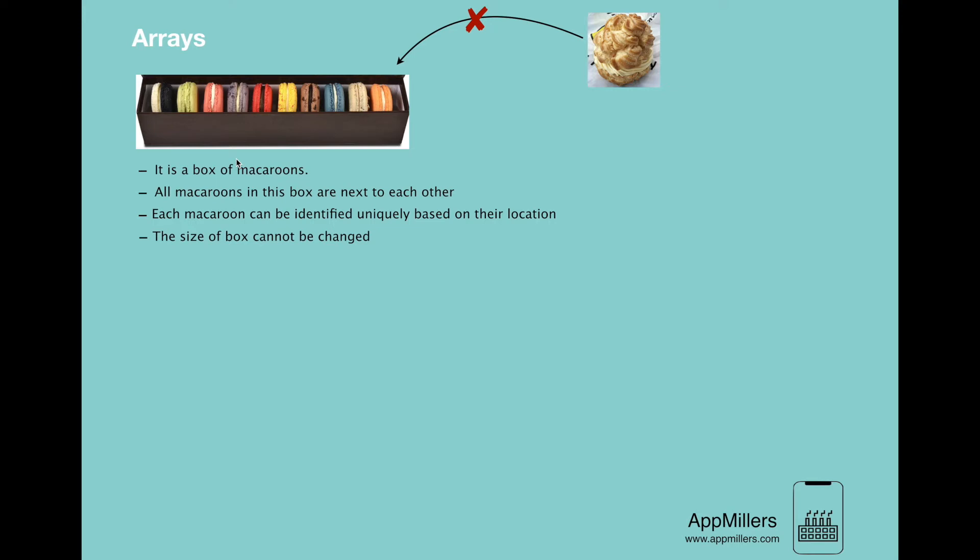So if we compare this box of macarons with the array structure, we see that they are very similar. So a typical array structure looks like this. Here we have six elements.